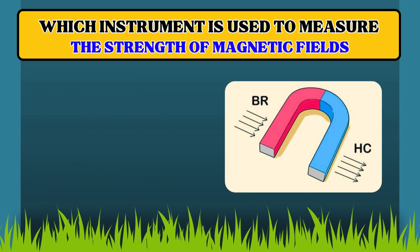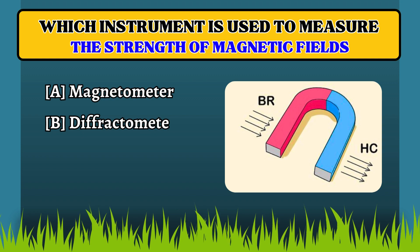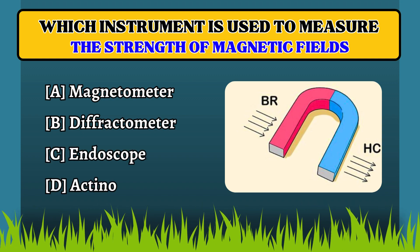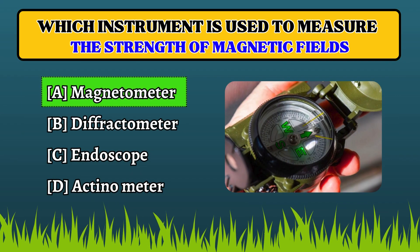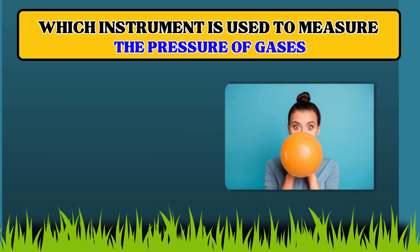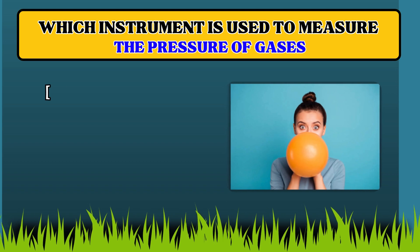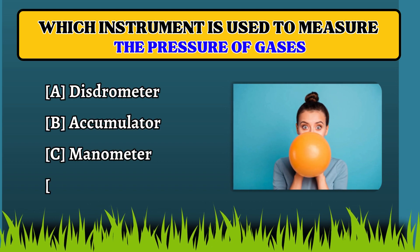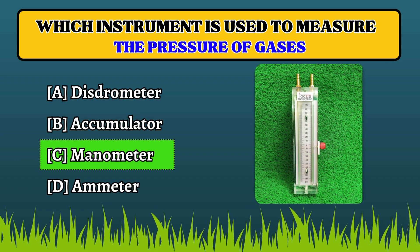Which instrument is used to measure the strength of magnetic fields? Magnetometer. Which instrument is used to measure the pressure of gases? Manometer.